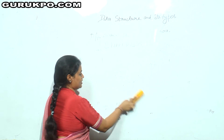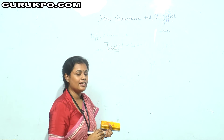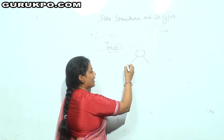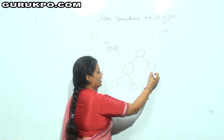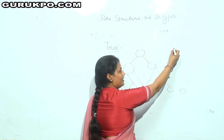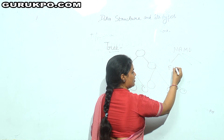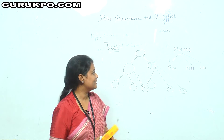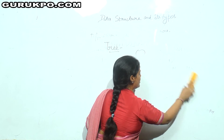Now we will go to non-linear data structure. In non-linear data structure, first we have tree. In a tree, data is stored in a non-linear fashion in a hierarchical order. An application of tree is storing a person's name divided into three fields: first name, middle name, and last name. In that case you can use a tree data structure.